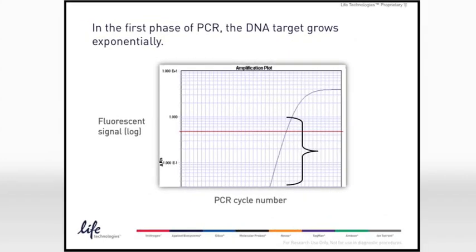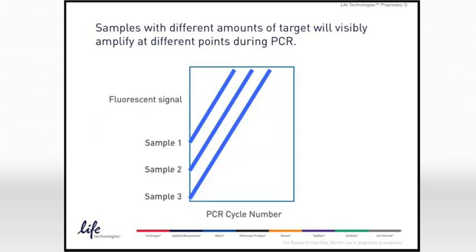Here's an example of one of the lessons presented during Fundamentals. With sufficient cycles, PCR will progress through three distinct phases. In the first phase of PCR, the DNA target grows exponentially. Samples with different amounts of target will visibly amplify at different points during PCR.